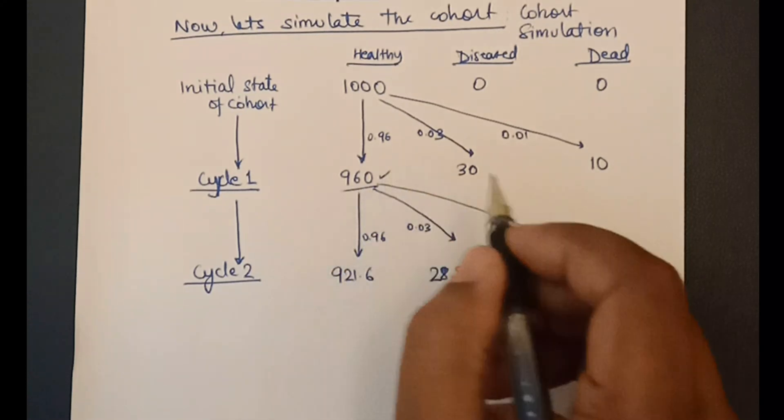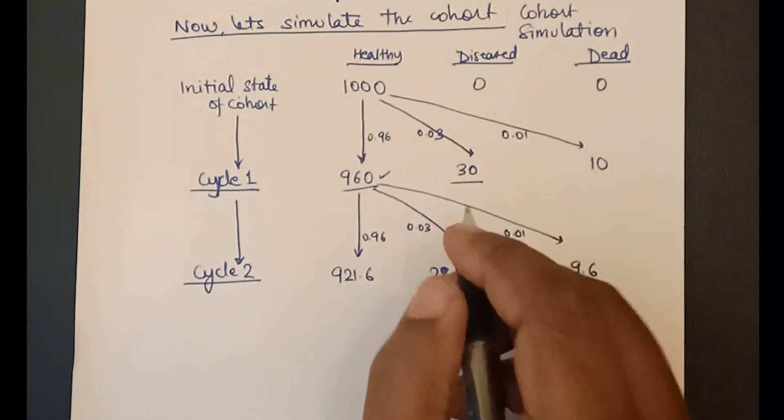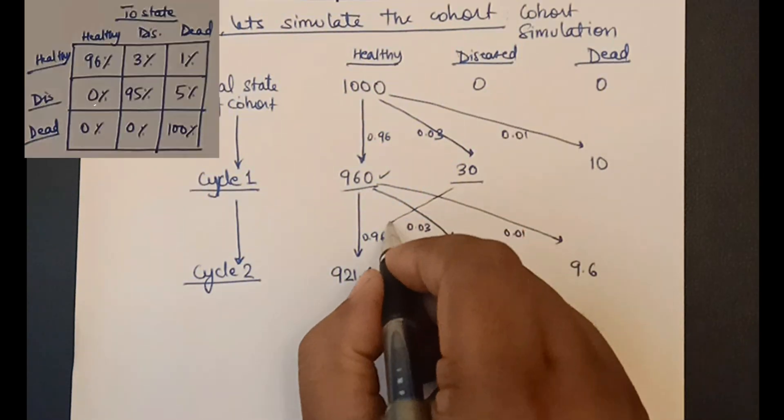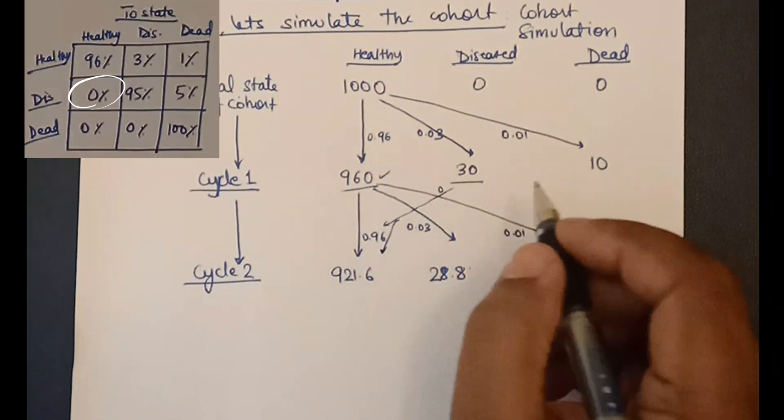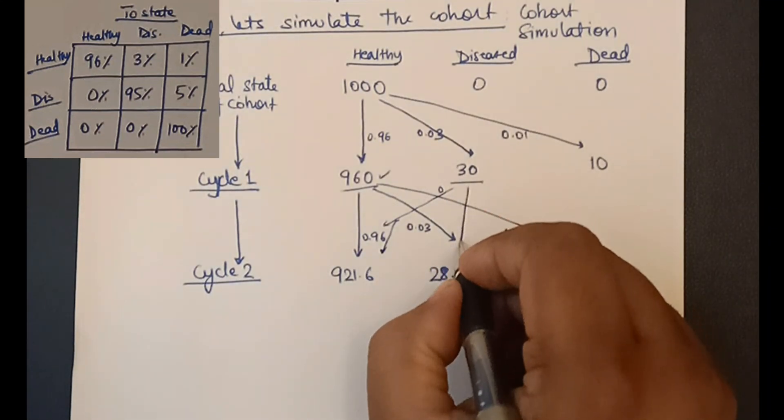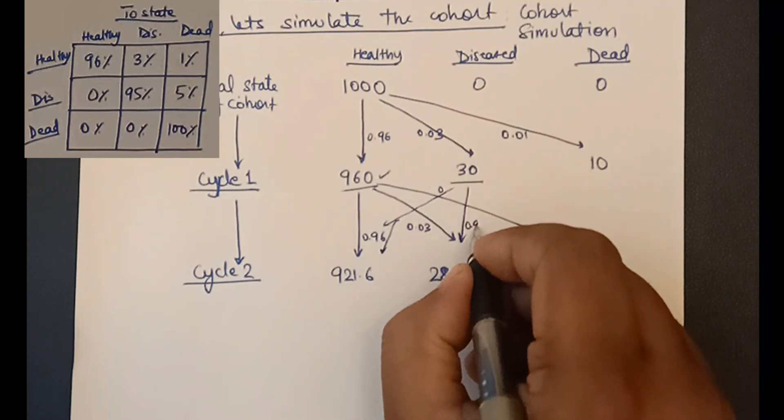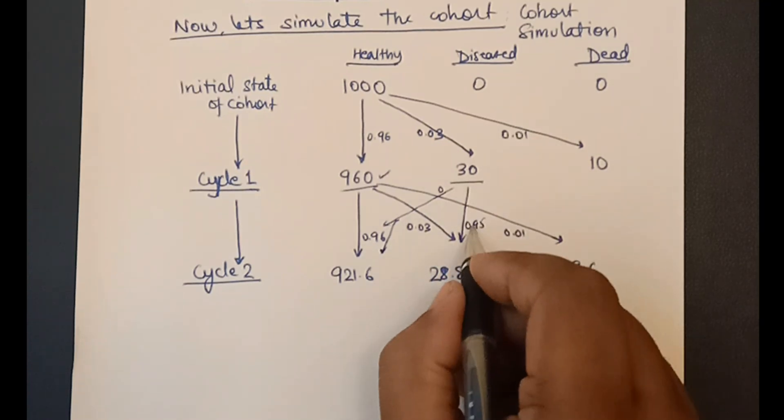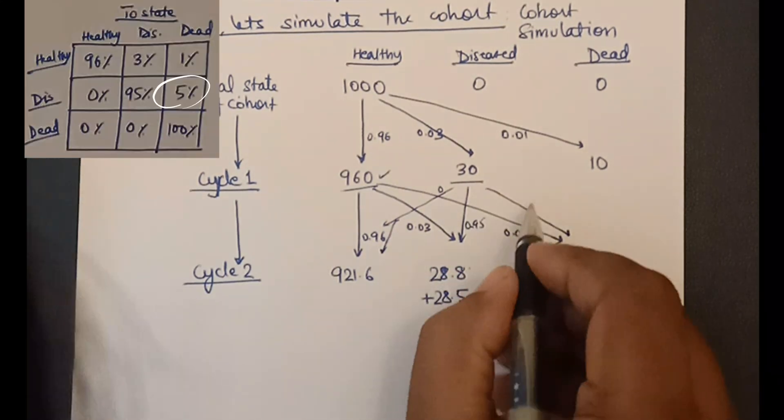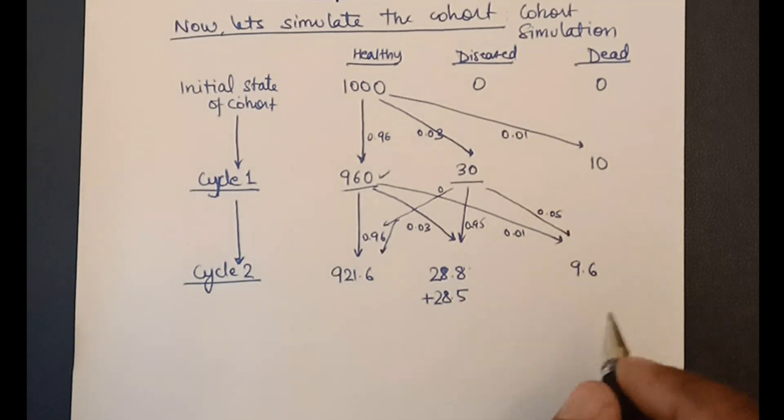Now, this time we have 30 and 10 patients in the diseased and the dead state. So we repeat this process. From diseased to healthy, there is 0 chance, so no contribution. From diseased to remaining in diseased state has 95% chance. So 30 multiplied by 0.95 gives us 28.5 which will get added over here. Similarly, 30 multiplied by 0.05 gives us 1.5 which gets added here.